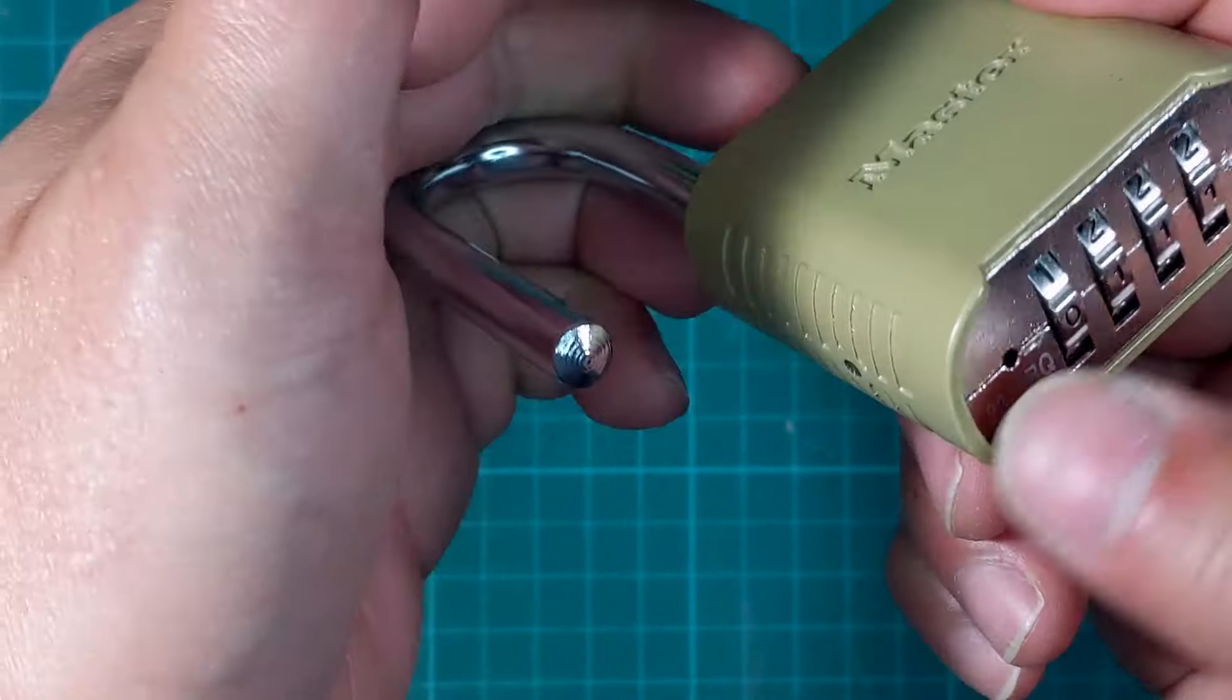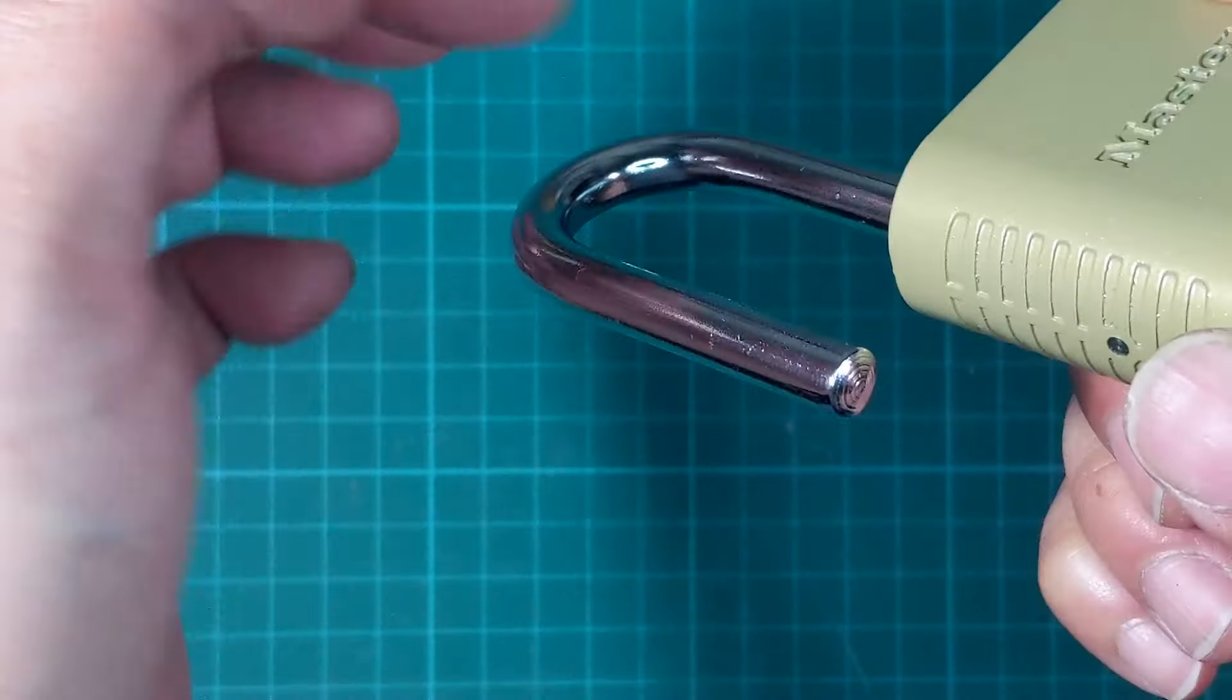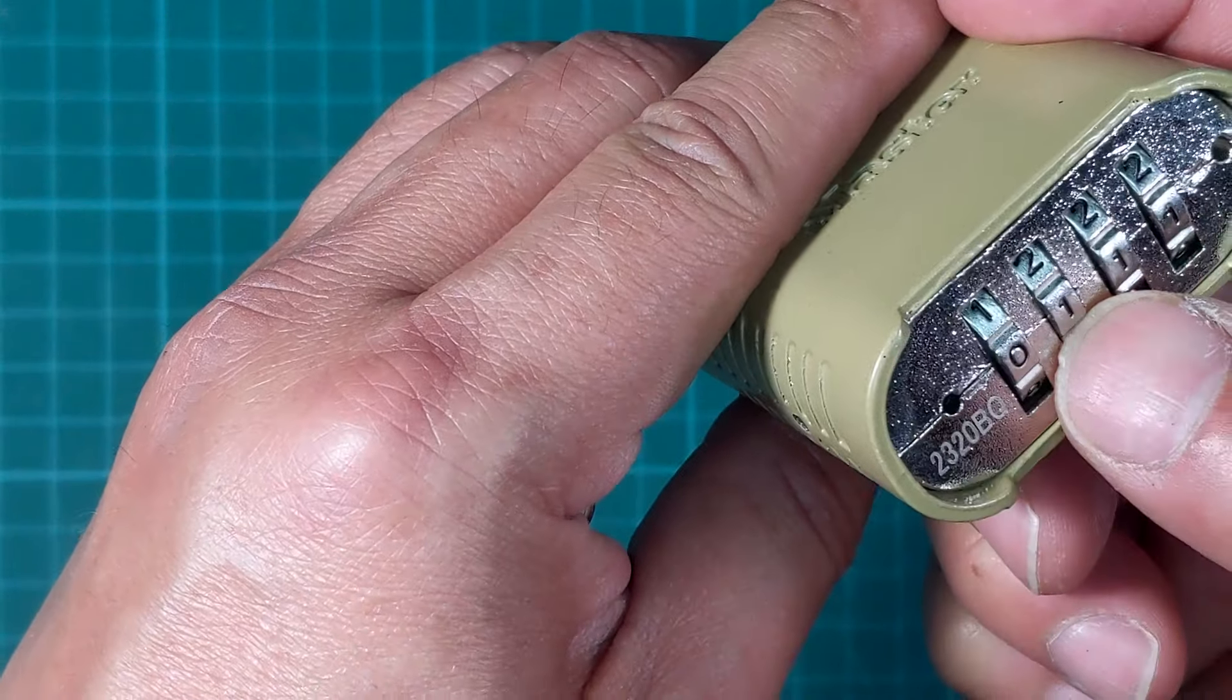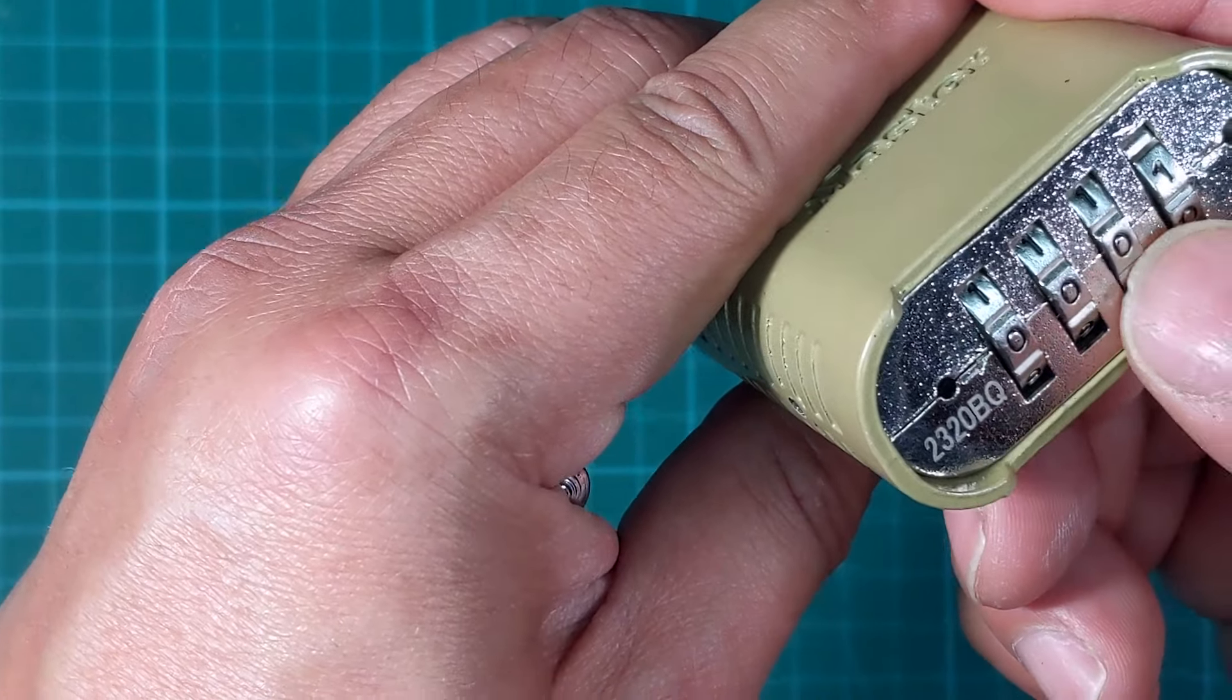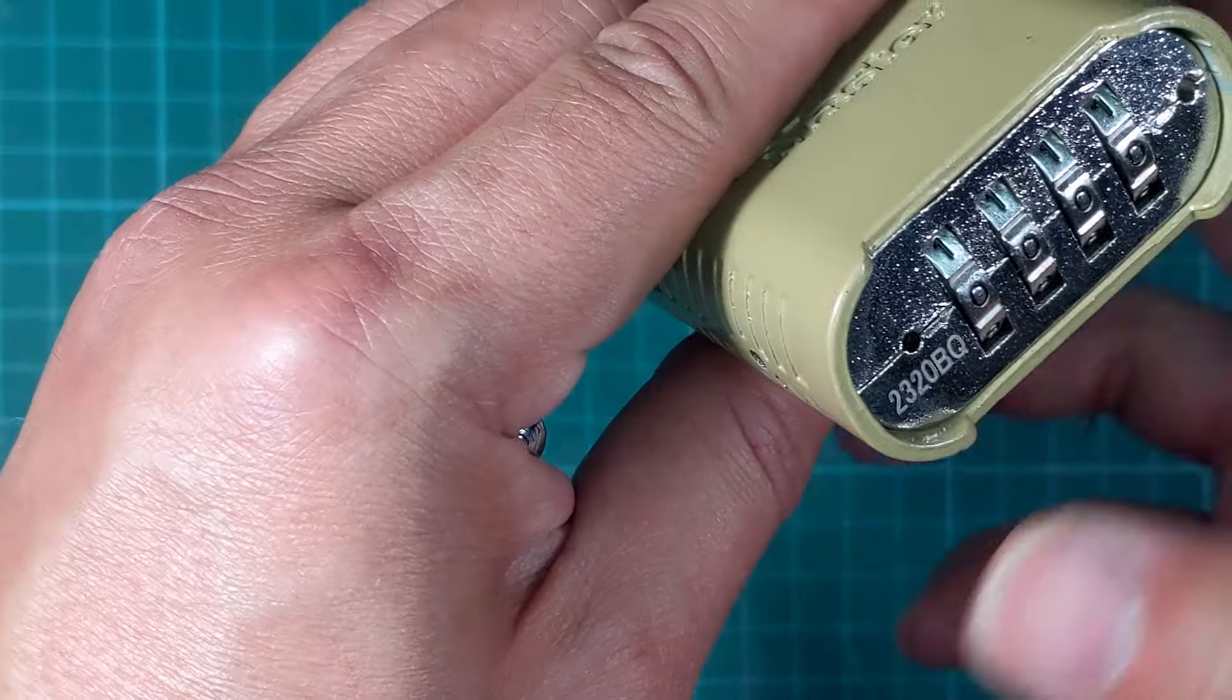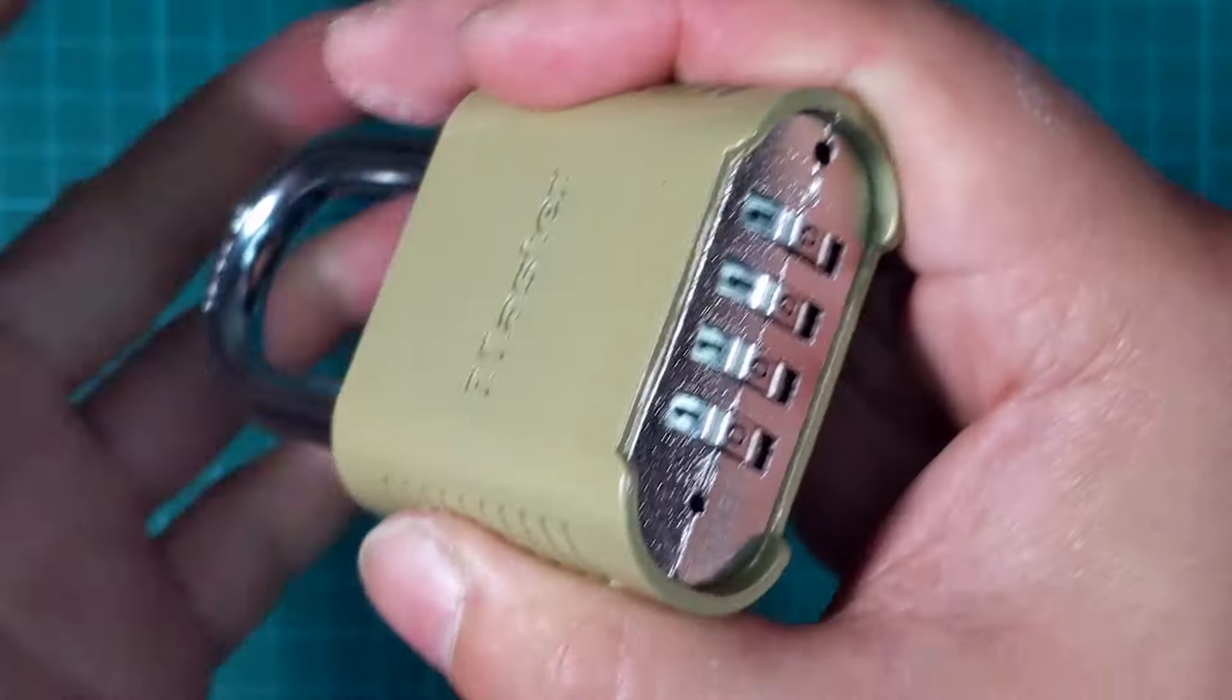Move it, see moving this shackle, moving it until you can move the numbers. Now I can move the numbers and then you would just set it to whatever number you want. Once you are able to move it, then you would pull it and then lock it.